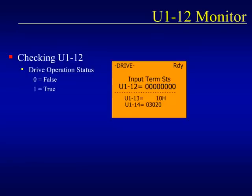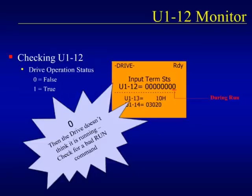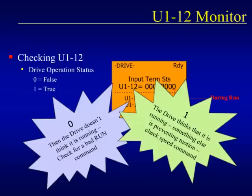Sometimes it is a good idea to see if the drive considers itself as running. To do this, we will use the U1-12 monitor. The far right bit of the drive operation status monitor U1-12 is the during-run bit. If the bit is a 0, then the drive doesn't recognize the run state and the problem most likely resides with the physical run signal. If the bit is a 1, then the drive does recognize the run condition, and the fact that the motor is not moving may be attributable to the lack of a speed command or one of the other situations we have discussed.